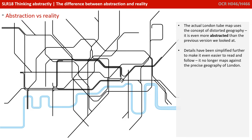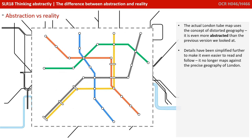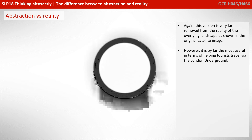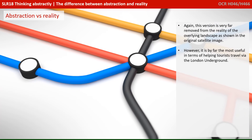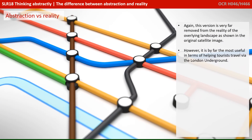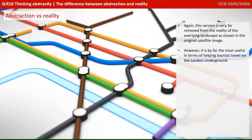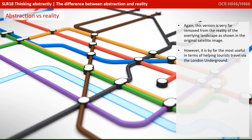The actual London Tube map uses the concept of distorted geography in a similar way. It's even more abstracted than the previous version we looked at. Details have been simplified further to make it even easier to read and follow — it no longer maps against the precise geography of London. Again, this version is very far removed from the reality of the overlying landscape as shown in the original satellite image. However, it is by far the most useful in terms of helping our tourists travel via the London Underground.